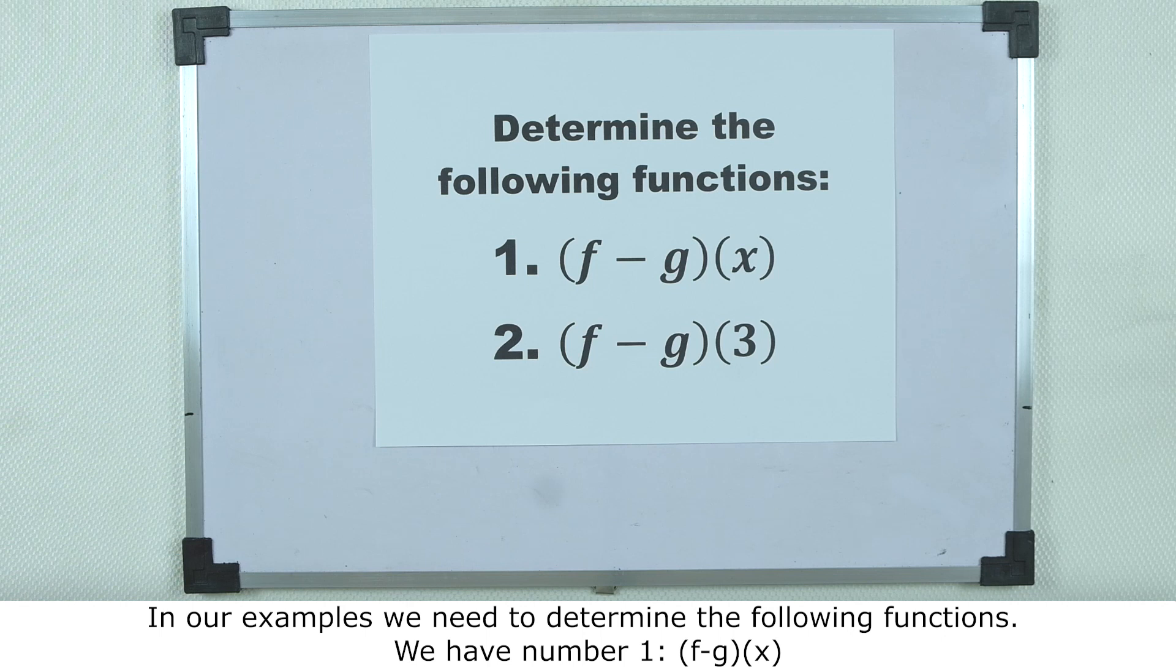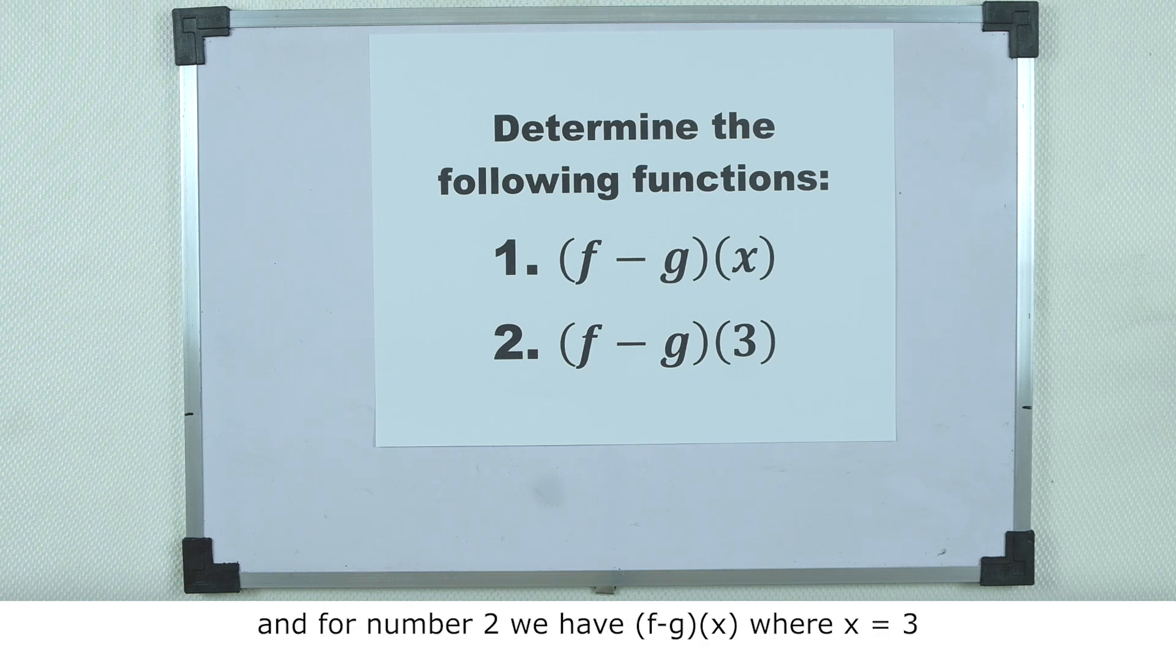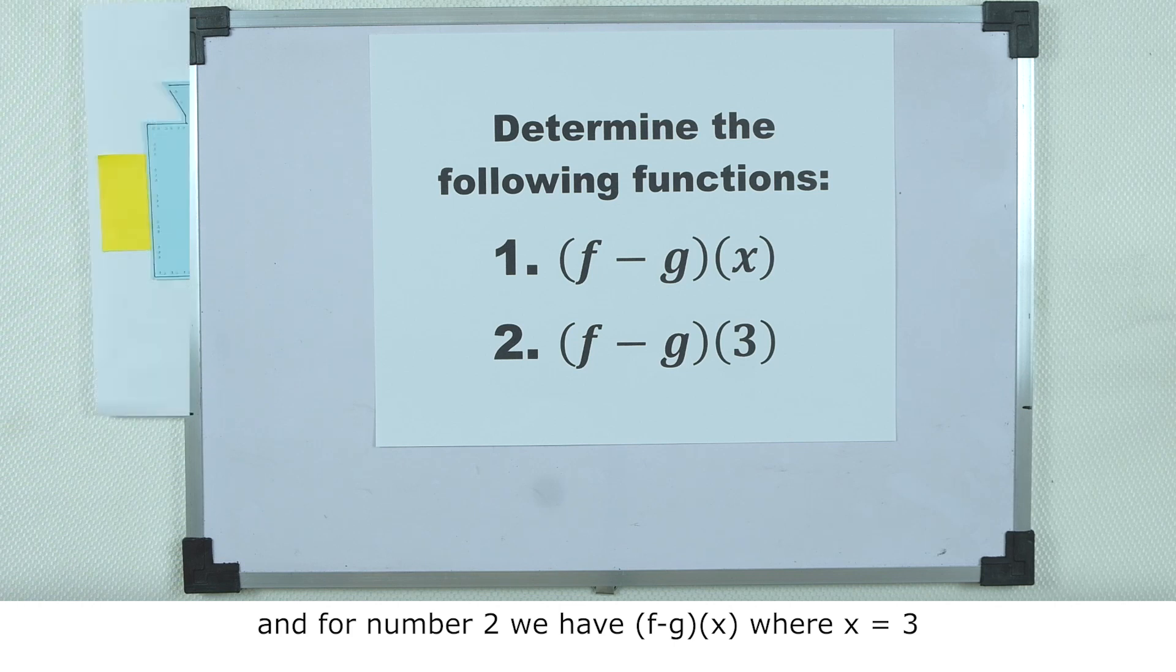The first one is the quantity of f minus g times x, and the second one is the quantity of f minus g, where x equals 3.